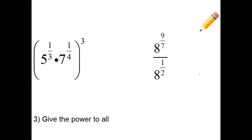Here's the third one: give the power to all. When you have an exponent outside of parentheses, you're going to give that power to everybody inside. So we're going to have 5 to the 3 times 1/3, times 7 to the 3/4. Now 5 to the 3/3 — and 3/3 is a very fancy way to write 1 — so we could just write 5 times 7 to the 3/4 power. That allows you to simplify, and that is as simple as it can be.